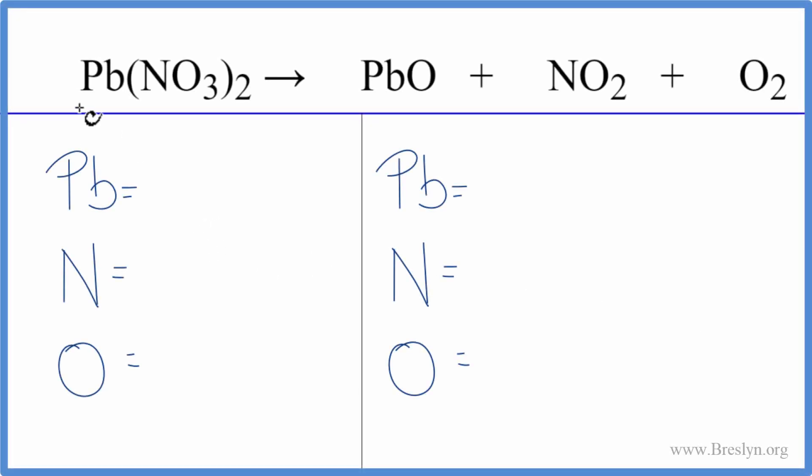To balance this equation, the decomposition of lead to nitrate, let's count the atoms up, and we need to be careful because we have a lot of different oxygen atoms over here.